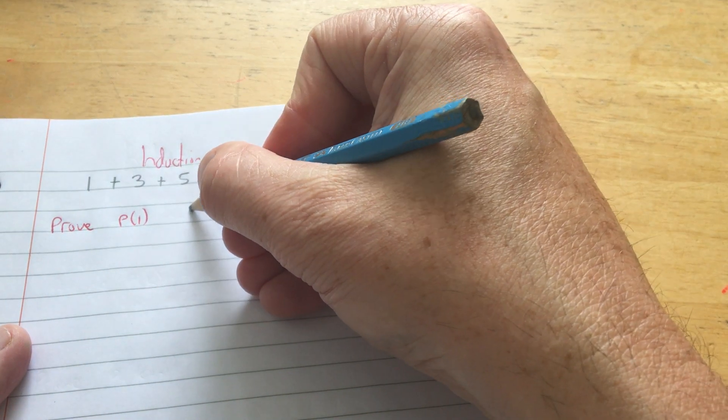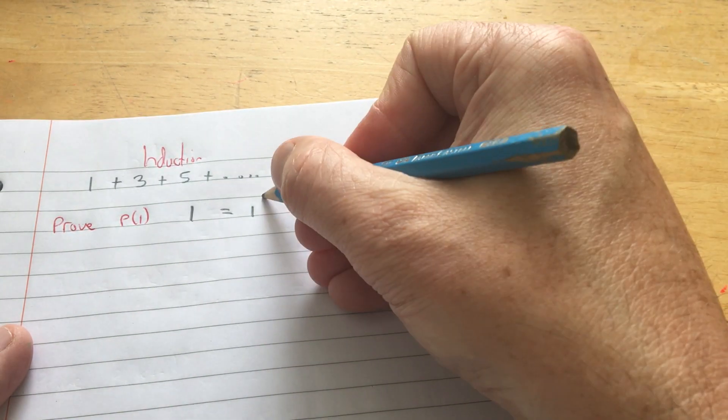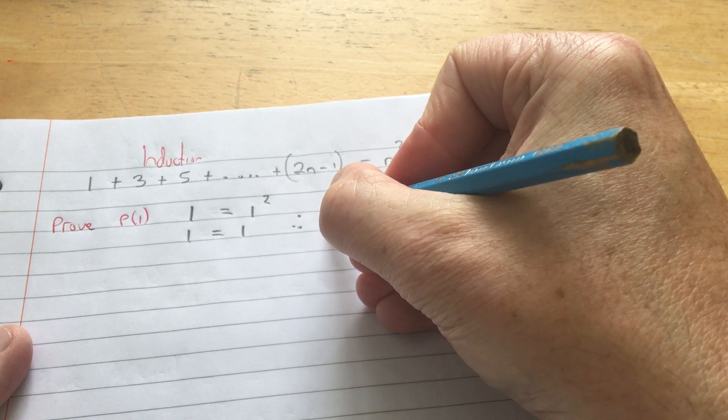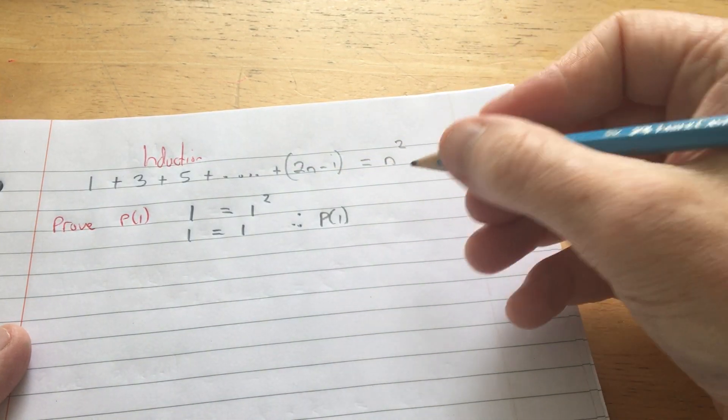The lowest natural number is 1. So we test P(1). The first odd number, is that equal to 1 squared? Well, indeed it is. So therefore, the proposition is true for P(1).